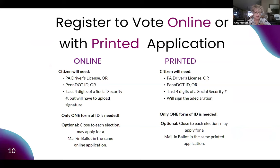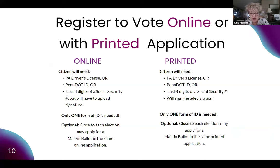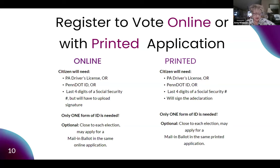For completing the online or printed application: the online application is easier with a PA driver's license or PennDOT ID because the signature is already on file. If registering with the last four digits of a Social Security number, applicants can upload a signature online, but we usually suggest they use a paper application — it's easier since the signature goes in the declaration box on the printed form. Only one form of ID is needed. Close to each election, a person registering can also apply for a mail-in ballot in the same application.